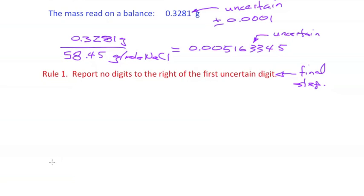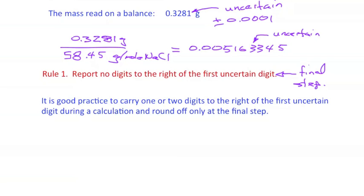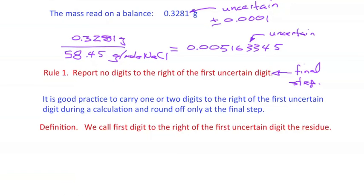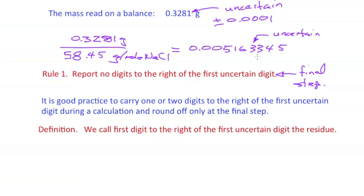If we have a multi-step calculation, we want to avoid rounding off multiple times in the same direction. When we look at rules for rounding off, it will be handy to look at the first digit to the right of the uncertain digit. That's a mouthful, so we give that first digit a special term. We call it the residue. So this digit is the residue.